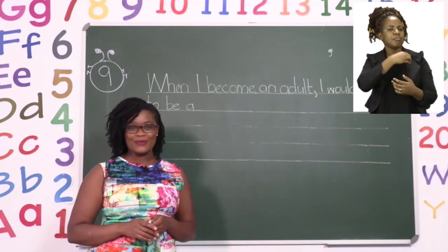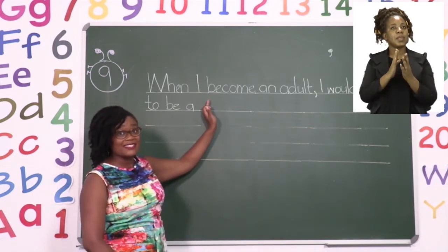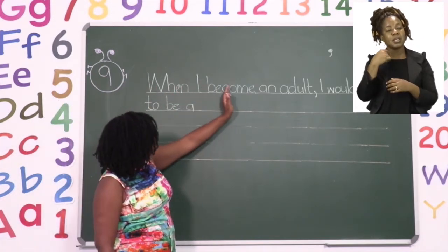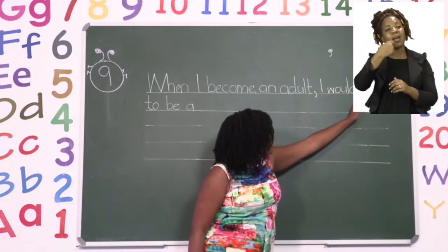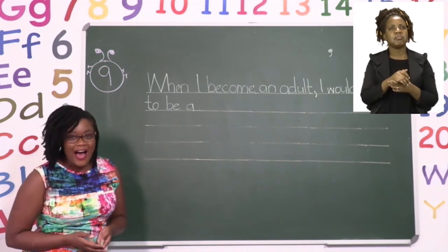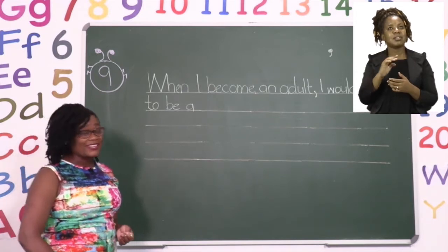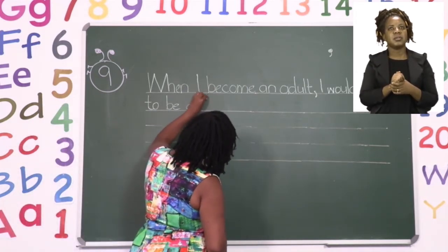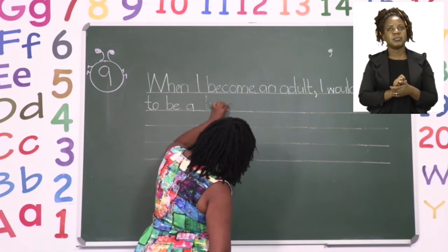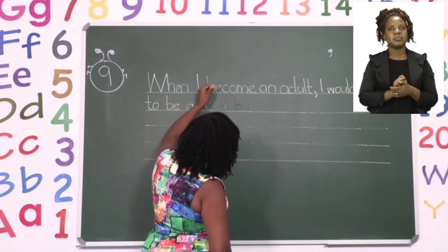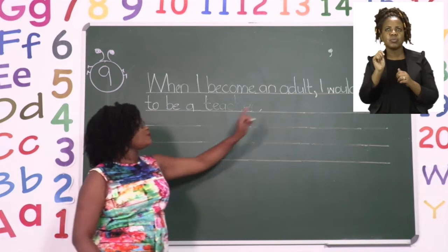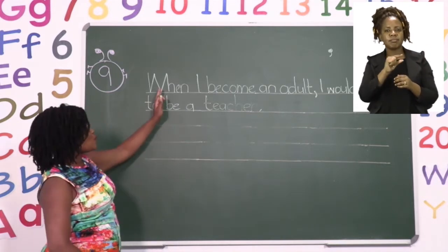It is up to you — please write what you would like to be after these words. Our sentence says: 'When I become an adult, I would like to be a.' In my case, I'm already what I wanted to be — I wanted to be a teacher, so that is what I'm going to write. Make sure that when you're writing your letters they are all the same size, and that the spaces between your words are also the same. 'I would like to be a teacher.' Full stop. I have put a full stop to end my sentence — that means I have done one sentence.